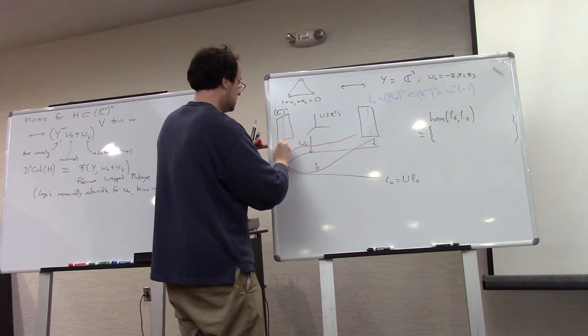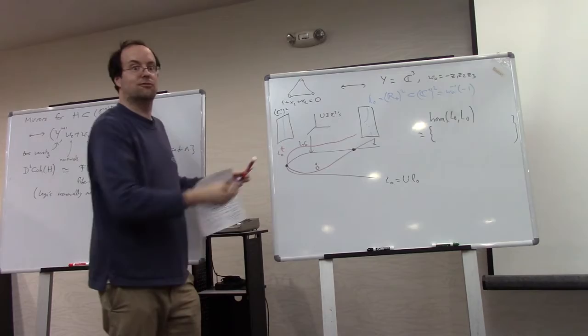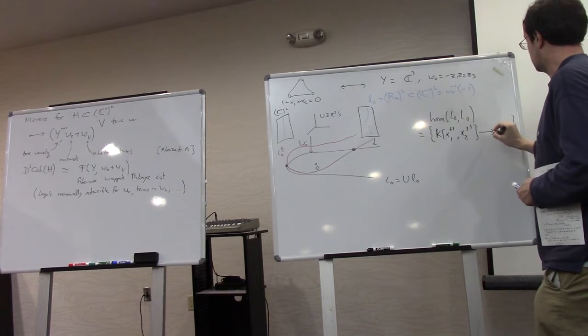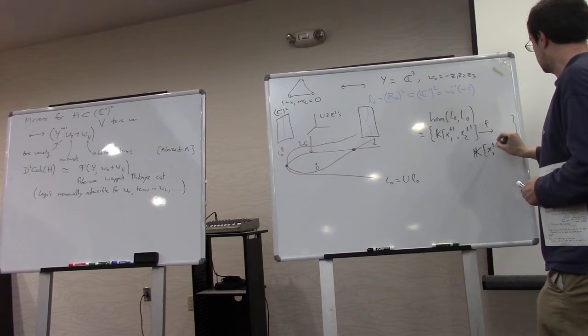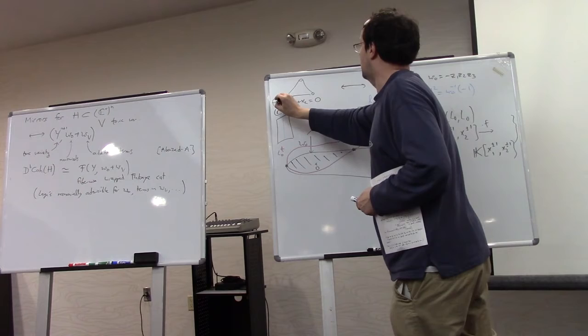So this was going to be the perturbed Lagrangian L0 t. And in this version of the story, I was going to do fiber-wise wrapping. So that I would end up with two copies of a Wrapped-Floer complex of R plus squared with itself at each of these intersections. So which is Laurent polynomials in two variables. And the differential, which counts holomorphic sections over this region, ended up being exactly multiplication by F, the defining equation of the pair of pants.